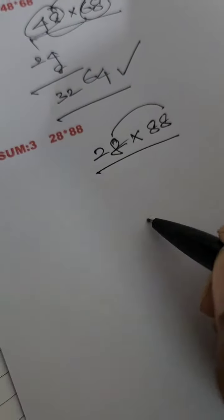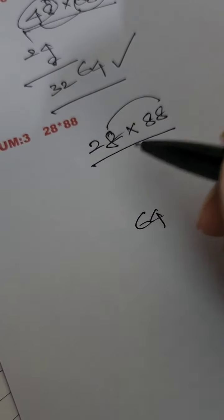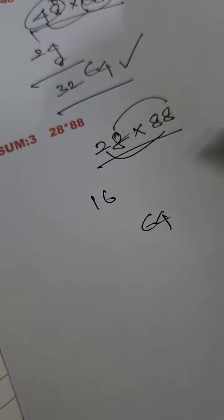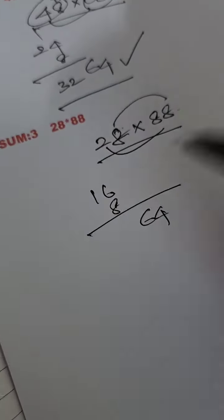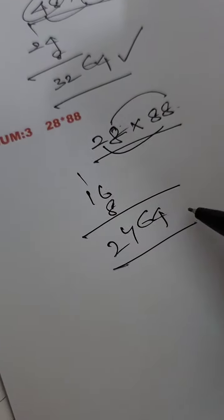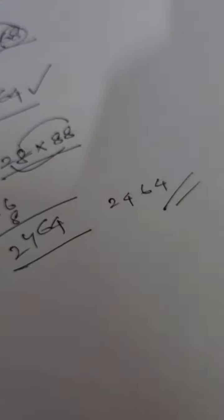8 times 8 is 64. Then multiply 2 times 8, answer is 16. What is the common digit? 8 is common. What is the answer? 24, 24, 64. Thank you.